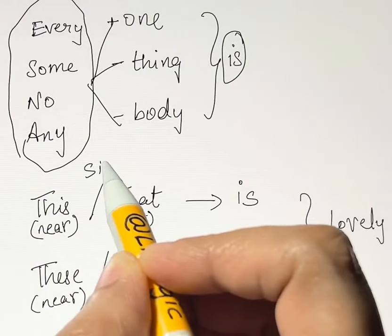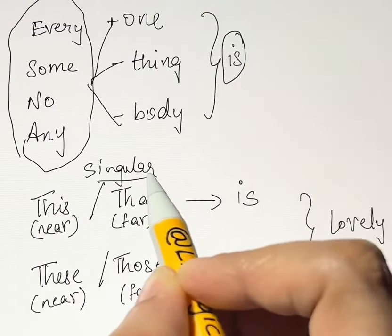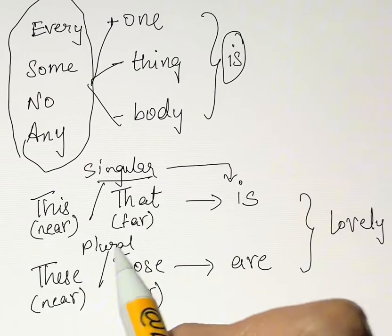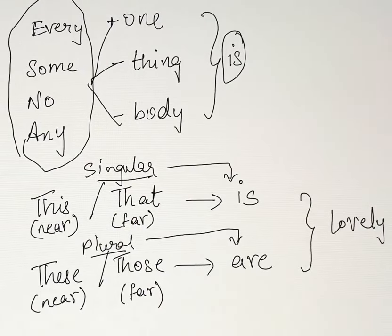These are the singular subjects which take the singular verb, and these are the plural subjects which take the plural verb. All right.